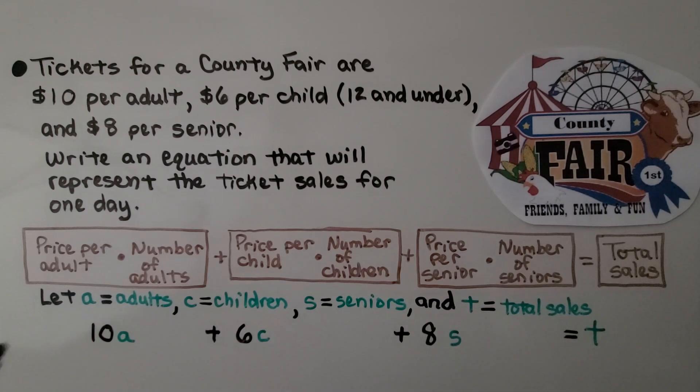So we can let A equal adults, C equal children, S equals seniors, and T equal total sales.